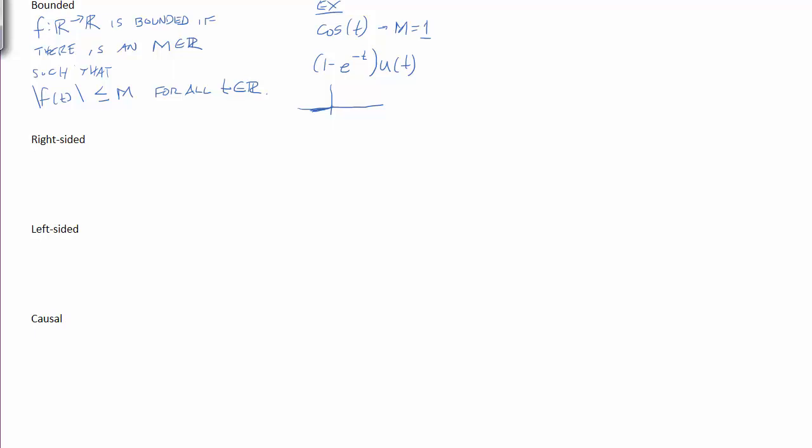And as time goes on, this exponential decays. And so what we get is something that looks like this, that asymptotes at a value of 1. So this is a bounded signal that also has a max min value of 1.